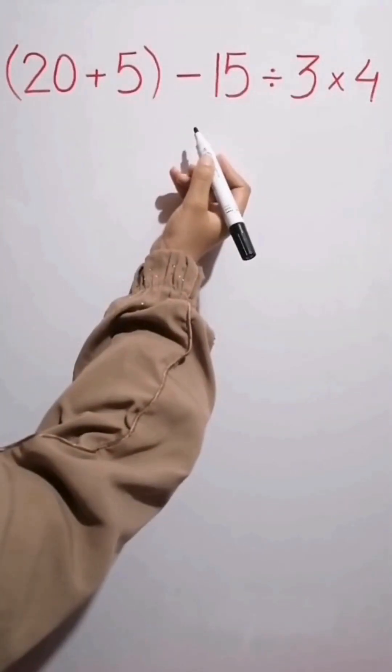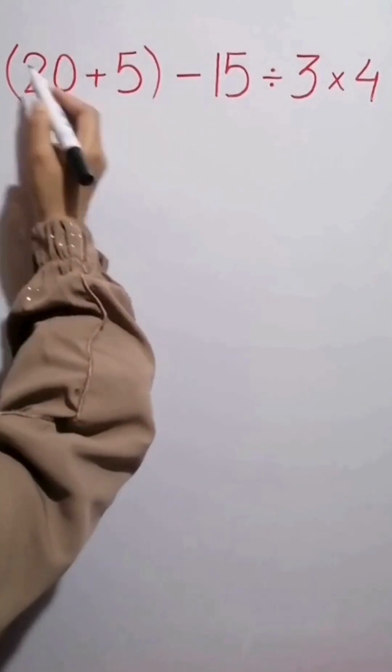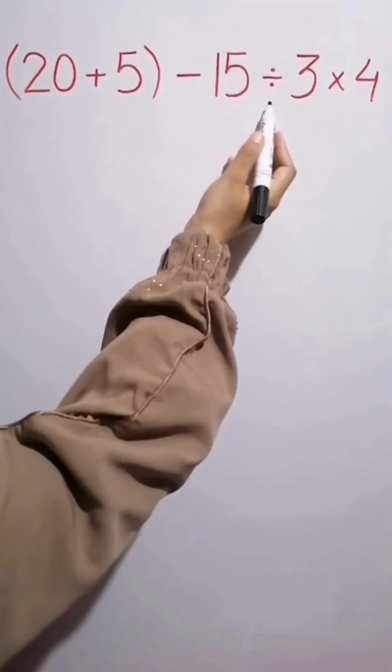Hey friends! Welcome to the IQ Search Channel. What is the value of the expression? 20 plus 5 inside the parentheses then minus 15 divided by 3 times 4.